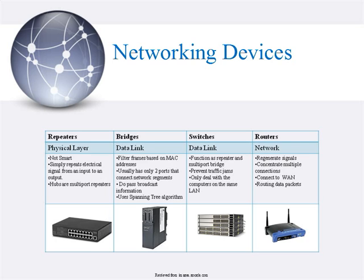Next, switches. A switch is sometimes described as a multiple bridge. It can have multiple ports to connect network segments, while a bridge usually has only two ports. A switch is more sophisticated than a bridge. Switches learn information about data packets received and use this to build tables to determine the destination of data sent between computers on the network. To prevent traffic jams, a switch makes sure data goes straight from its origin to its proper destination. Switches remember the address of every node on the network. A router is needed to send data out to the Internet or across a WAN, since switches are not smart enough.